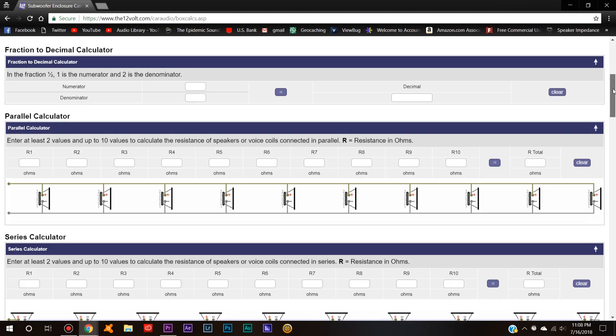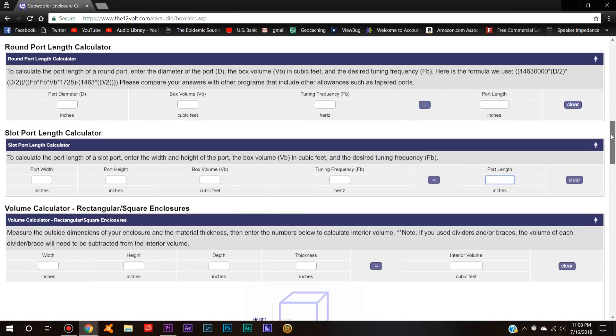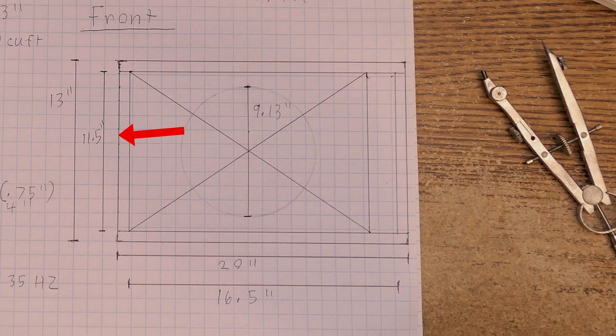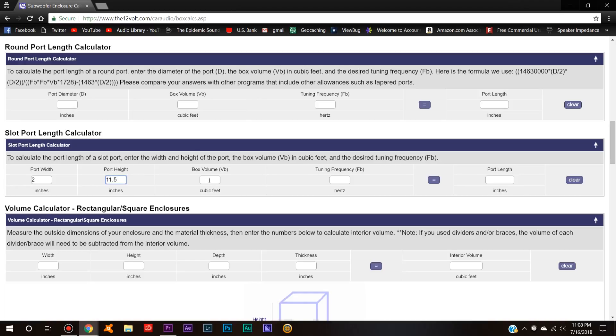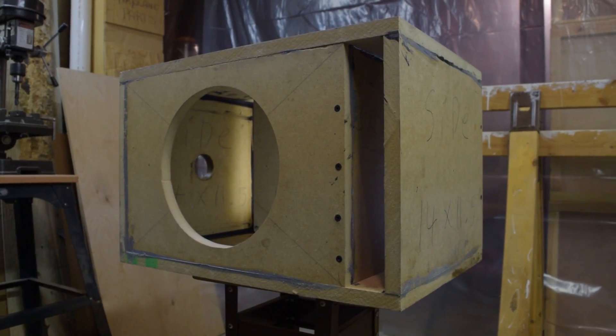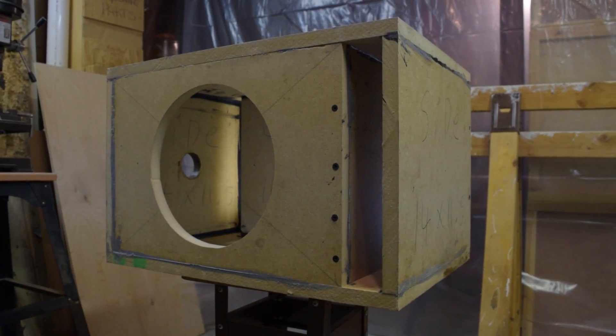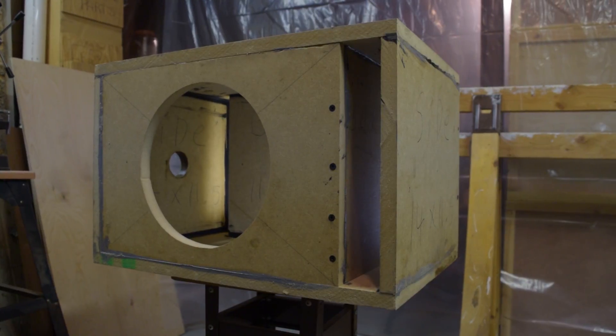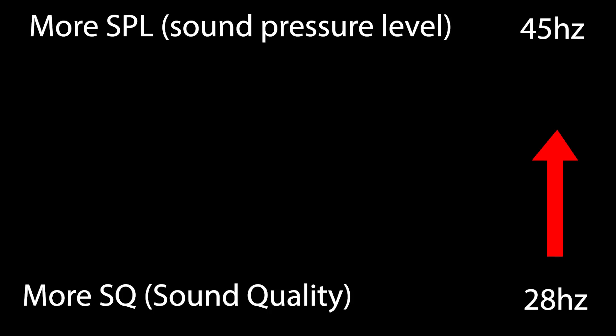Going back to the free subwoofer calculators, find the one for the slot port. I'll put 2 for the width, and looking back at the first page, the height will be 11.5, and now the box volume is going to be 1.54 cubic feet. I will be tuning this box to 35 hertz, and pretty much the tuning frequency is when the box will hit free air resonance, so basically if the bass gets to 35 hertz or below, it'll sound more boomy and loud. Typically, if you want more SPL, you'll want to tune higher, but if you want better sound quality, it's better to tune lower.